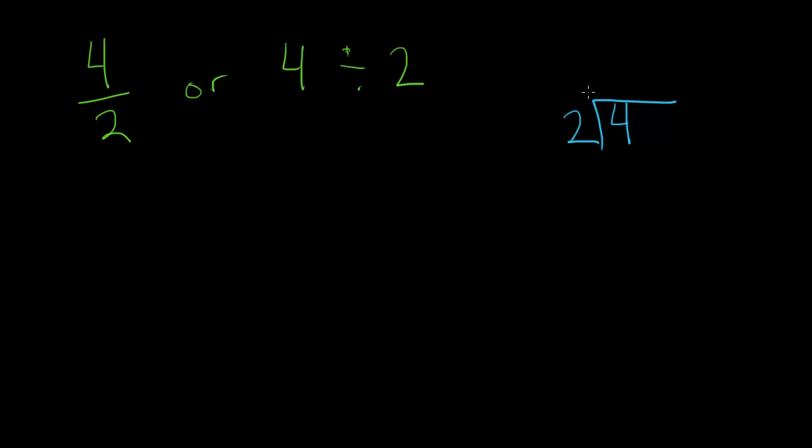And then the way we would solve this is we figure out how many times does two go into four, which is two. It's pretty obvious. Two times two is four. We subtract those and that gives us a remainder of zero. So then we can stop because there's nothing left over. So what that means is two goes into four twice.